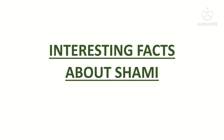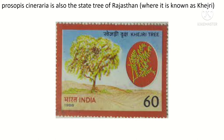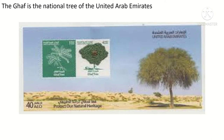Shami is the state tree of Rajasthan — called 'kheddi' there — and Rajasthan has a postal stamp dedicated to it. It is also the national tree of the United Arab Emirates, which also has a postal stamp for it. Both Rajasthan and the UAE are dry, low-water areas, so shami trees thrive there — that is why both regions have given it such high honor.